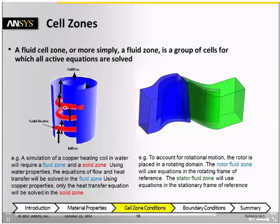And for the copper region, which is shown in red, you specify just the copper properties, and there Fluent solves only the heat transfer equation for the conduction in the solid zone.